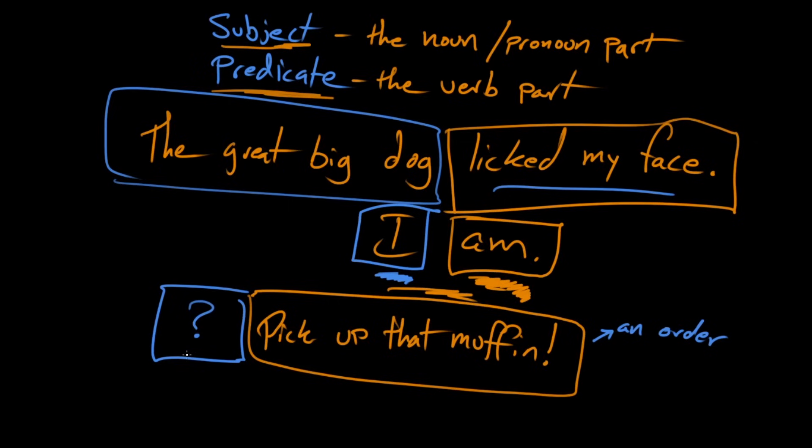So this is kind of like an invisible secret subject. Right. The subject really is you. Okay. You pick up that muffin. But I don't have to say it out loud. Because I know that you're talking to me. Because I can tell because you're looking at me and you're yelling at me about a muffin. Yes, I am.